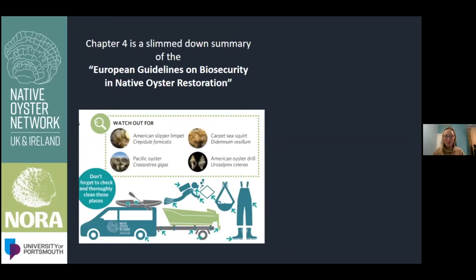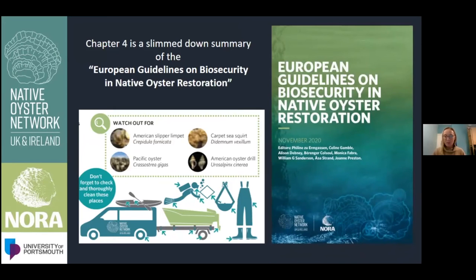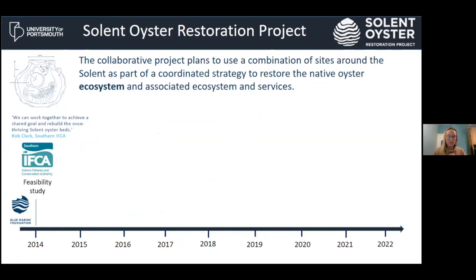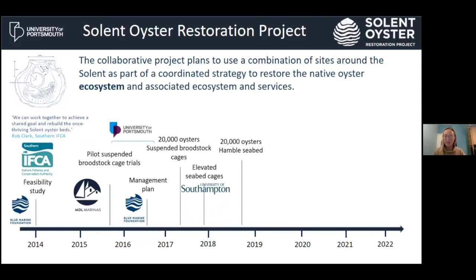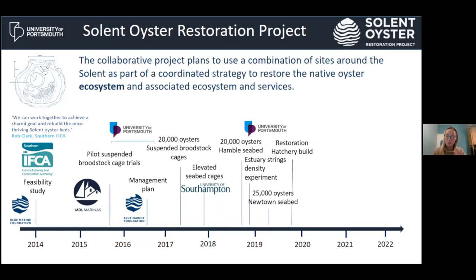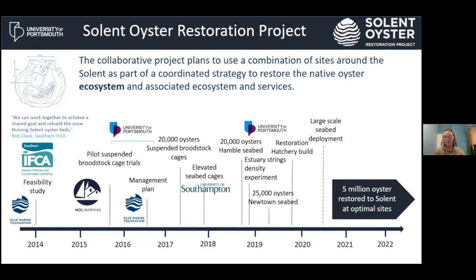Making sure we don't spread invasive species or disease is really important, so we also produced a biosecurity handbook — a big consideration when moving organisms around the marine environment. The Solent restoration project started as a glint in the eye in 2014. Over the last few years we've been trialling various things: putting broodstock cages in marinas to pump larvae into the Solent, placing 20,000 oysters on the seabed as part of a trial. We're also building a restoration hatchery — breeding oysters at the IMS — and next year we plan to put 2 million oysters on the seabed, working towards 5 million at optimal sites across the Solent.